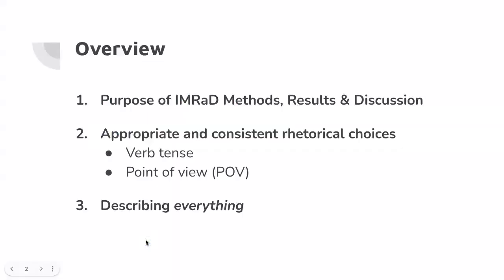First I'll review generally what the methods, results, and discussion sections do and how they differ from each other. Then I'll talk through two of the rhetorical choices that students often struggle with: verb tense and point of view switching. And lastly I'll go over how you have to describe everything and give some tips for how you can do that specifically in your methods and results sections.